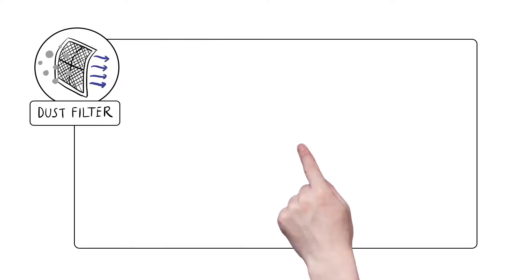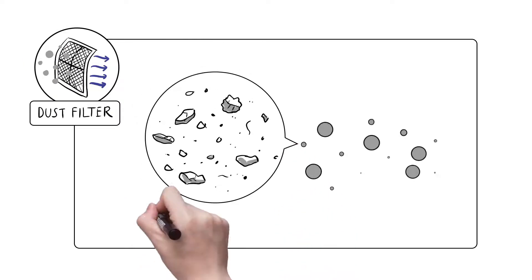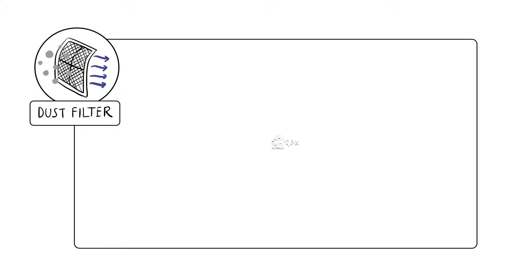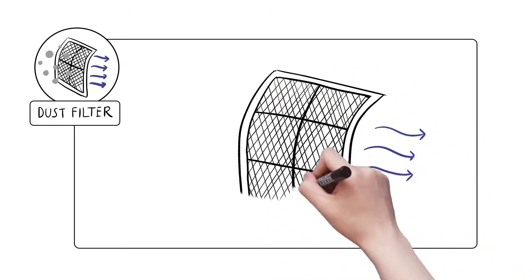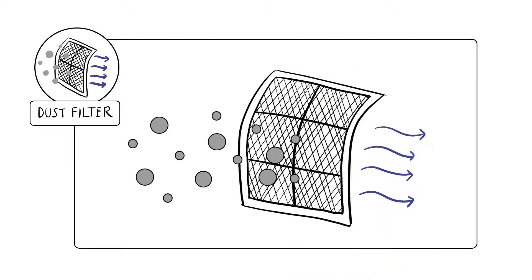First, dust filters. Dust filters trap small harmful dust particles in the filter by forcing air through a fine mesh, filtering the air as it goes through the air conditioning unit.